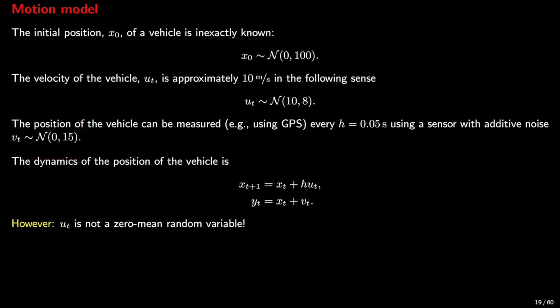The dynamics of the position of the vehicle is given by this pair of simple equations. It is important to note that the velocity, ut, is not a zero mean random variable, so we cannot apply the equations of the Kalman filter directly.